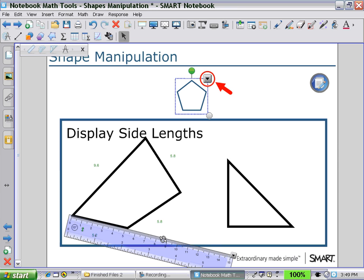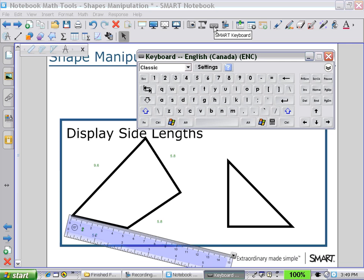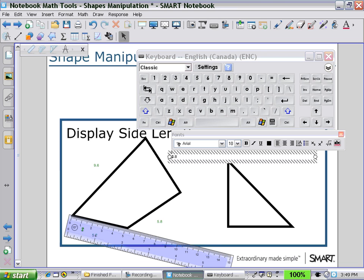You can change the side lengths for context. So here I open up my smart keyboard again, double click on one of the side length values, and then enter in a measurement.